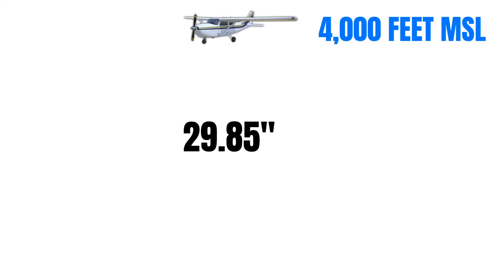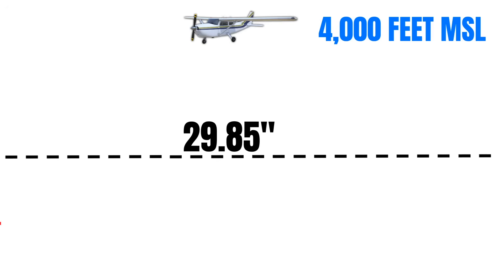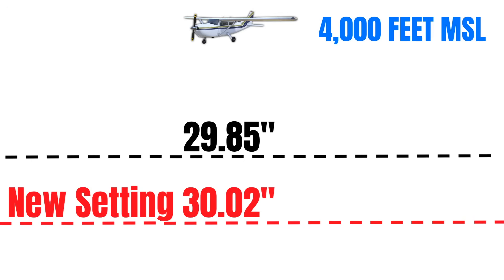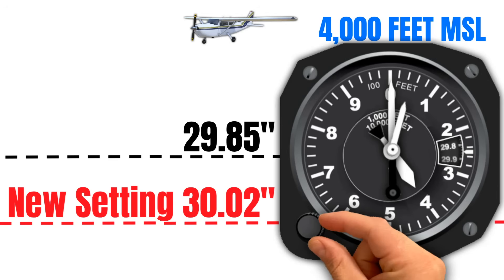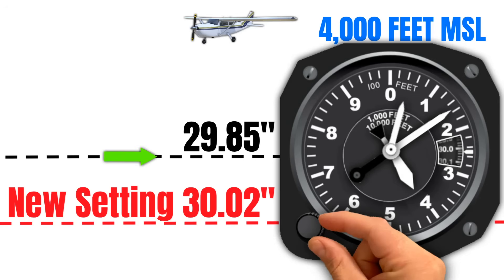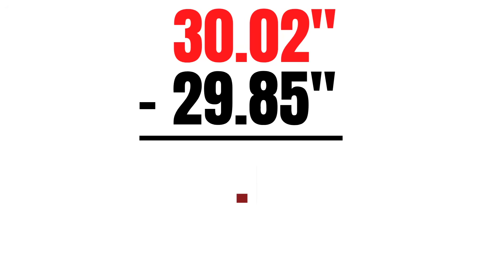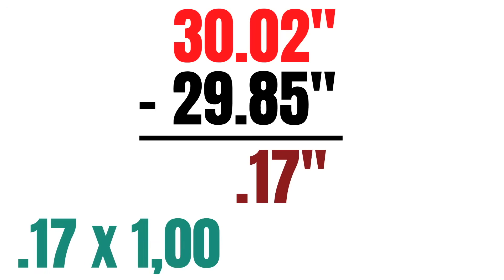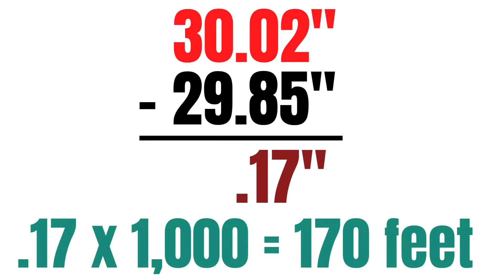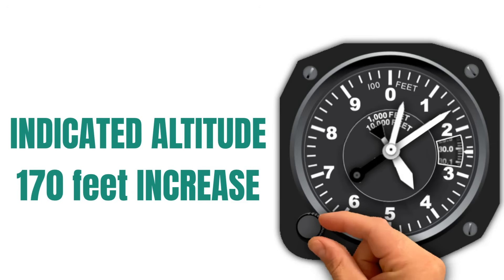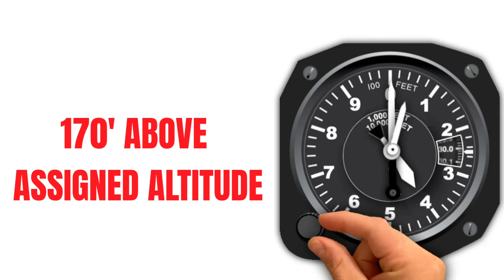Let's try one more. Let's say I'm flying at 4,000 feet MSL with an altimeter setting of 29.85. How would my indicated altitude change if ATC gave me a new setting of 30.02? Well, I'm spinning in a bigger setting, so my indicated altitude would increase. Sea level was originally here, but now I'm telling it that it's down here, so I'm higher above sea level. So we'll take 30.02 and subtract 29.85 from that to get a difference of 0.17. Multiply that times 1,000 and we get 170 feet. Our indicated altitude increased by 170 feet. In this case, we'd want to get back down to our altitude of 4,000 feet because we're 170 feet above our assigned altitude now.